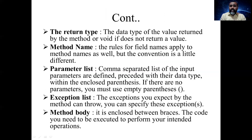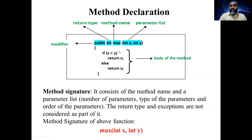The fifth component is the exception list — if your function has any exception handling, you can throw exceptions in the method using the throws keyword. The sixth component is the method body — the area between the opening and closing braces is called the body of the method. So this is the method declaration with its various components: modifier, return type, method name, parameter list, exception list, and body.